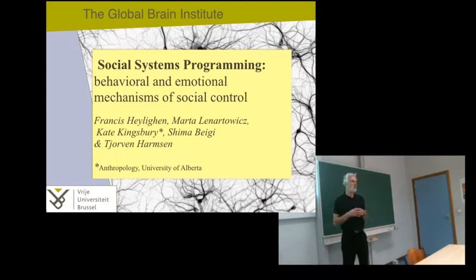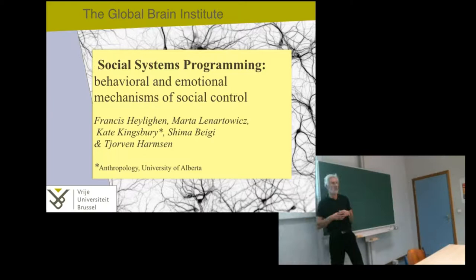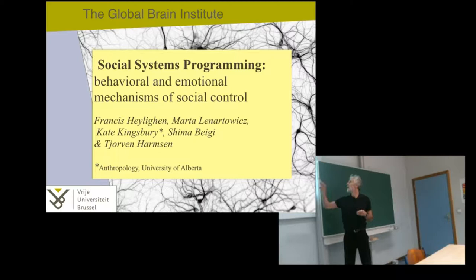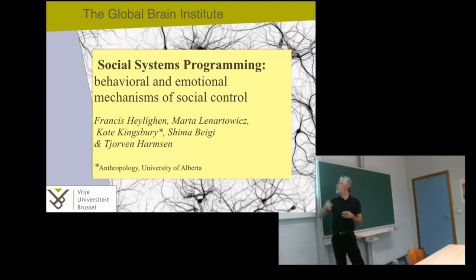I'm Francis Harry and I'm the director of the Global Brain Institute and the Evo, Complexity and Cognition Research Group here at the Vrije University in Brussels. This is work I did with quite a number of colleagues, most of whom are also members of the group: Marta Lenartowicz, who is here; Kate Kingsbury, who works at the Department of Entrepreneurship at the University of Alberta in Canada; Shima Beiji, also a member of our group; and Jovan Hansen, though she will probably start working in an institute in Germany soon.